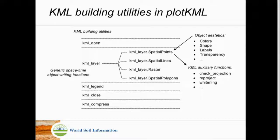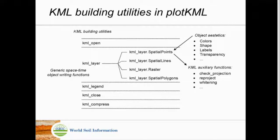You can use the KML building utilities to quickly make your own function. For example: you want a raster image with a polygon map overlay. You make a small function: open KML, put a raster, put polygons on it with transparency, close it and zip it. You can make your own types of views. The package is now quite flexible.